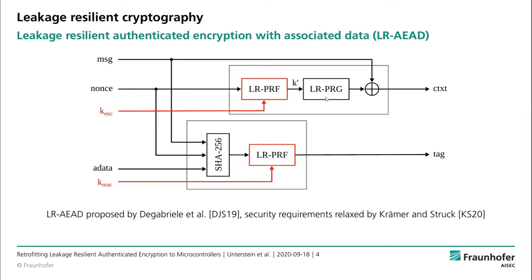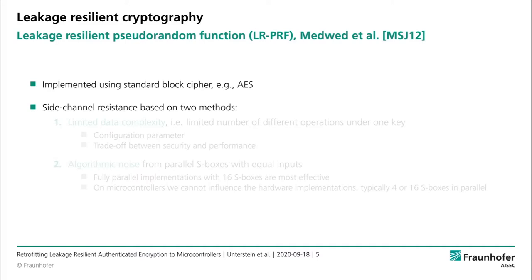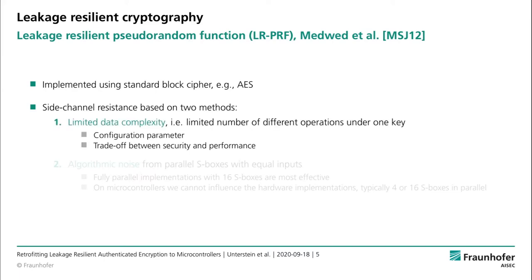In the paper, we also discussed the security of the PRG in more detail. But it's easy to see that since this ephemeral key is only valid for one message, it suffices if the PRG resists a simple power analysis rather than differential power analysis like the PRF, which uses the long-term secrets. The PRF we use was proposed by Medved et al. and can be implemented using a standard block cipher like AES. The side channel resistance is based on two methods. The first is limited data complexity — there is only a limited number of different operations under one key that an attacker can observe. The attacker can still repeat those operations, but has no influence over the inputs. This is a configuration parameter that allows for a tradeoff between security and performance.